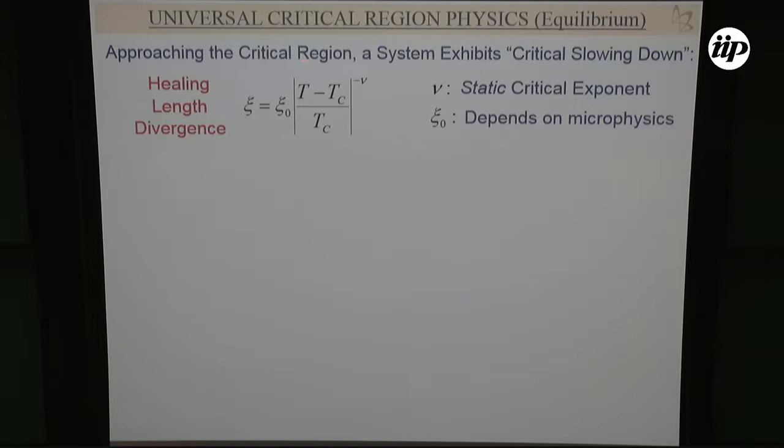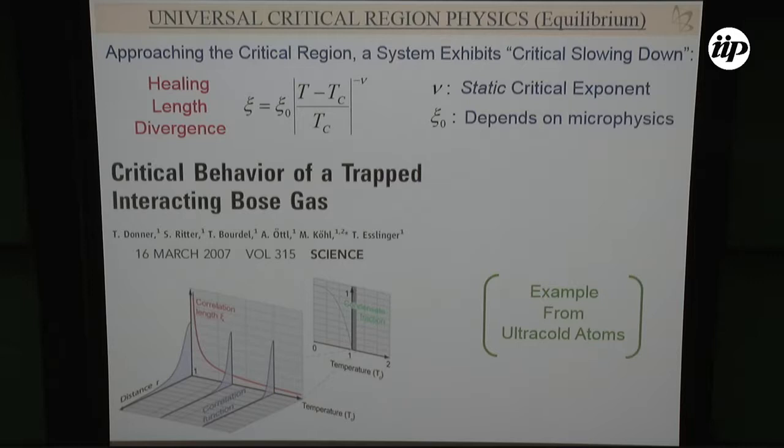Assuming the system is approaching equilibrium, the coherence length diverges as you approach the critical region, with a critical exponent governing that. Here's an experiment from cold atoms from ten years ago showing how the correlation function changes as a function of temperature in the region of the transition.